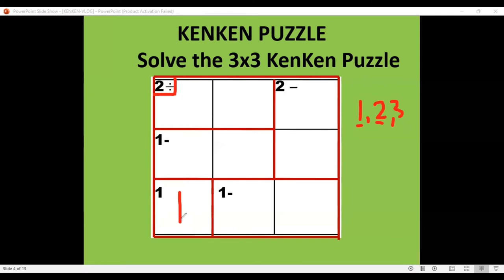Since we already put 1 here, the numbers that should be here are 1 and 2. Therefore, the number 1 will stay here and 2 will go in this box. It follows the same principle as Sudoku. Since the digits we are only using are 1, 2, and 3, automatically this remaining box will be 3.